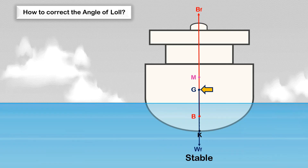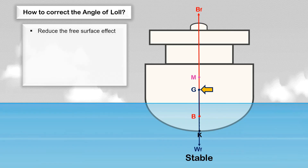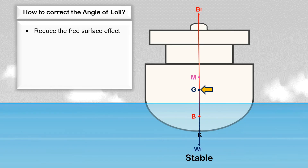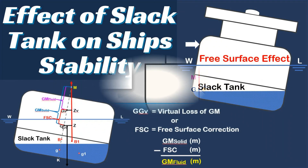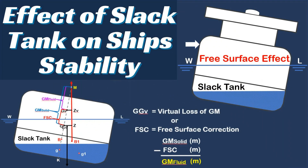Another way to correct the angle of loll is to reduce the effect of free surfaces due to slack tanks. Identify the slack tank below the ship's G and start topping it up — filling those tanks until completely full reduces the virtual rise of the ship's center of gravity. I have made a separate video about the free surface effect of slack tanks that can cause a virtual rise of the ship's center of gravity — kindly check the link in the description.